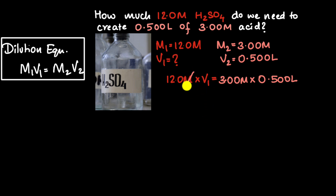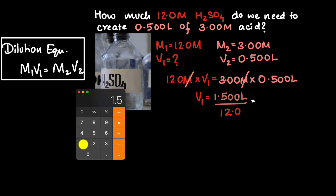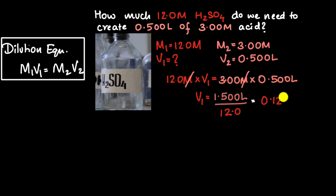Simplifying, the molar units cancel, and 3 times 0.5 equals 1.5. Dividing both sides by 12 gives V1 = 1.500 / 12.0 = 0.125 liters to three significant figures. So 0.125 liters is the amount of concentrated H₂SO₄ we need to add to water to get our desired solution.